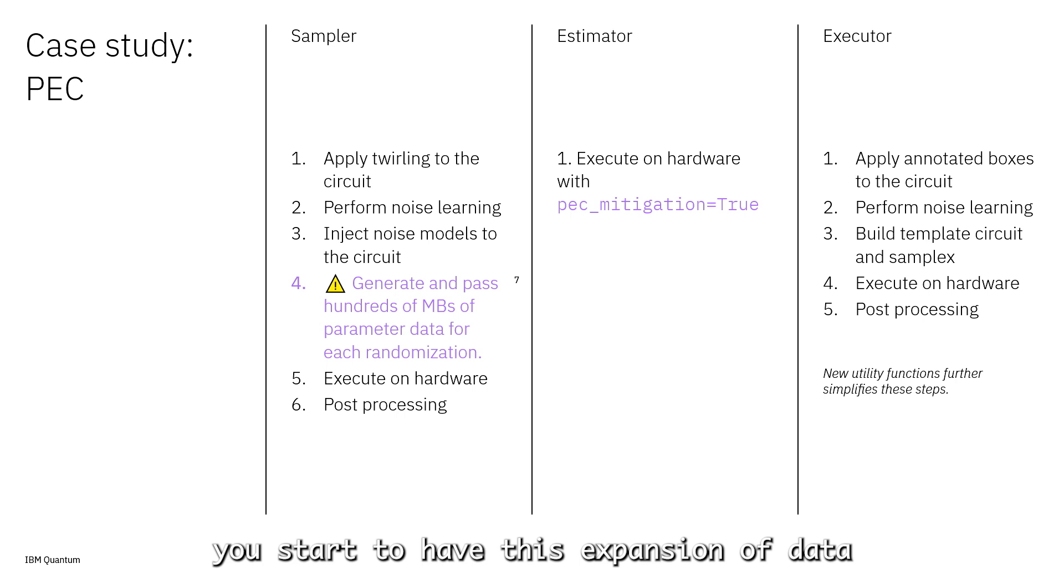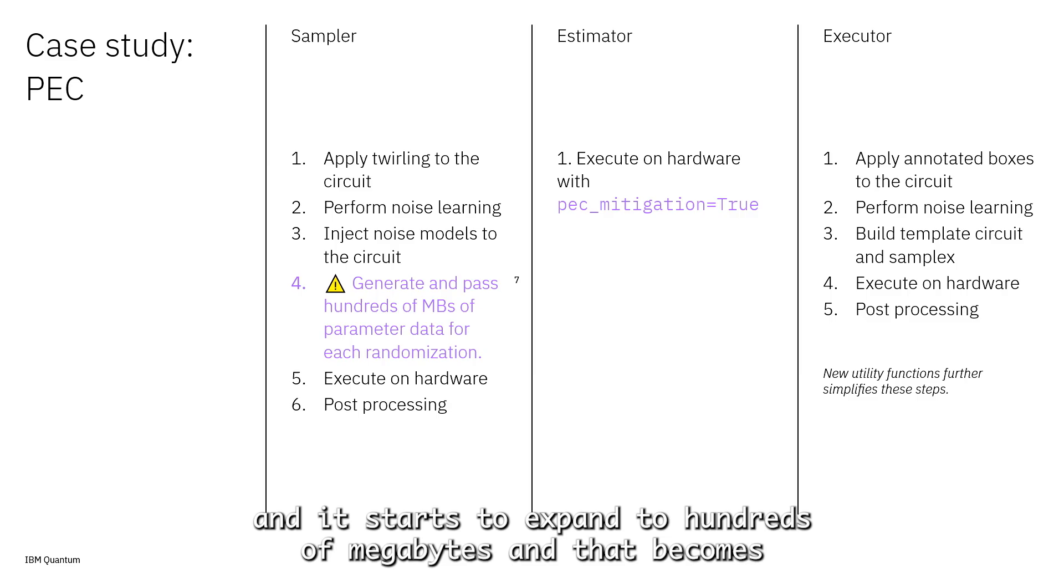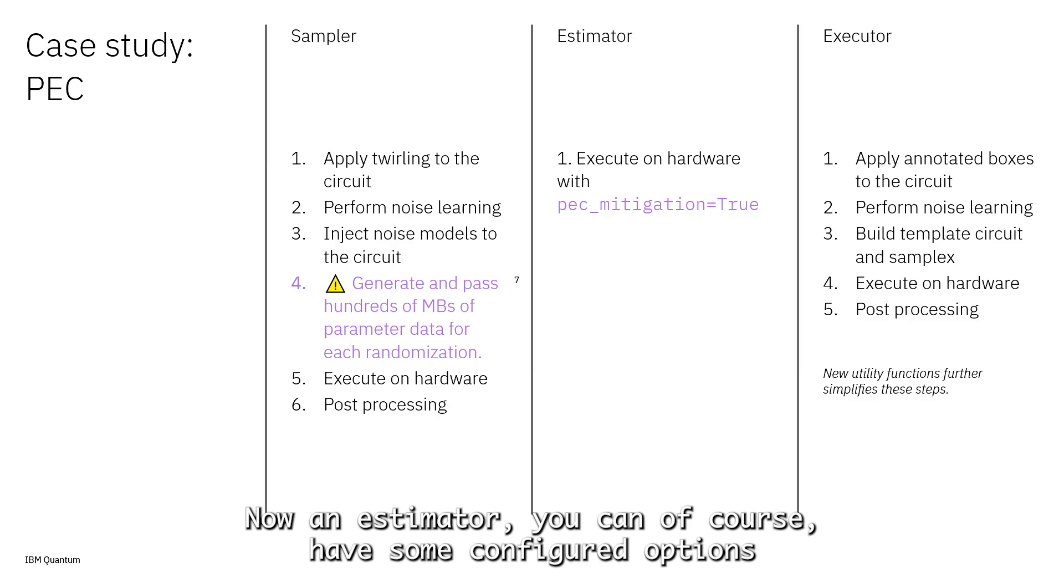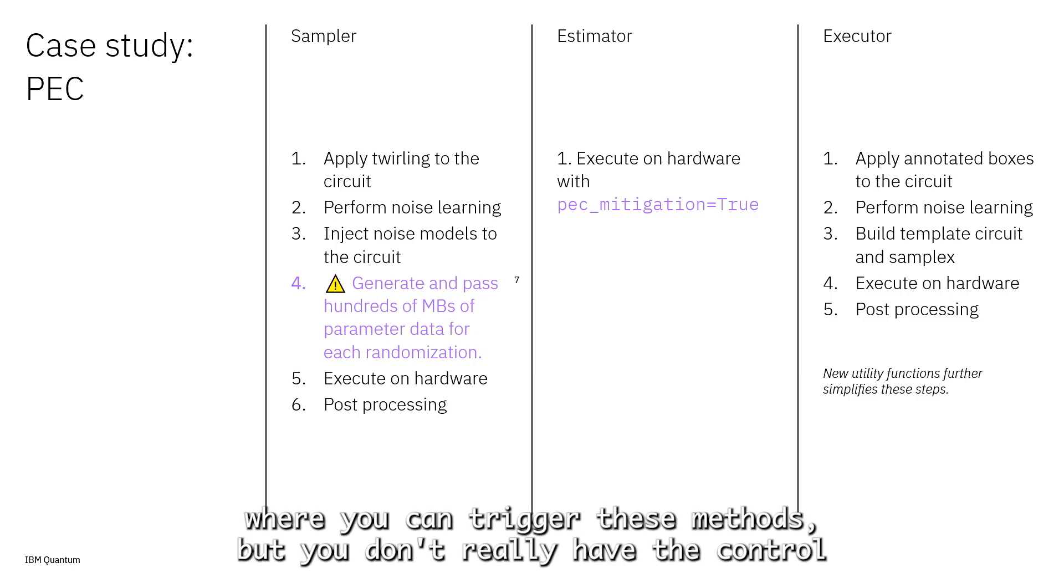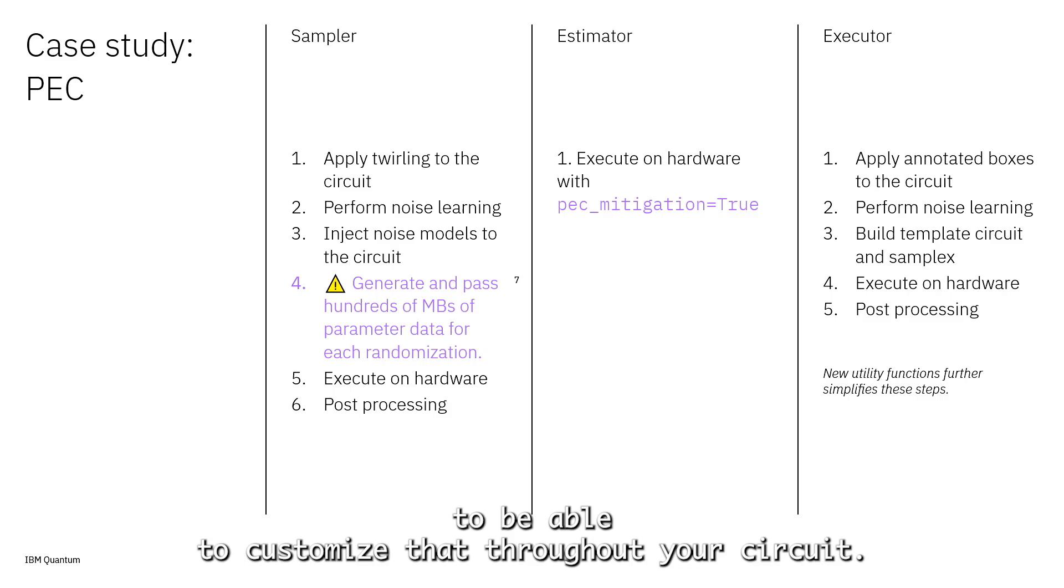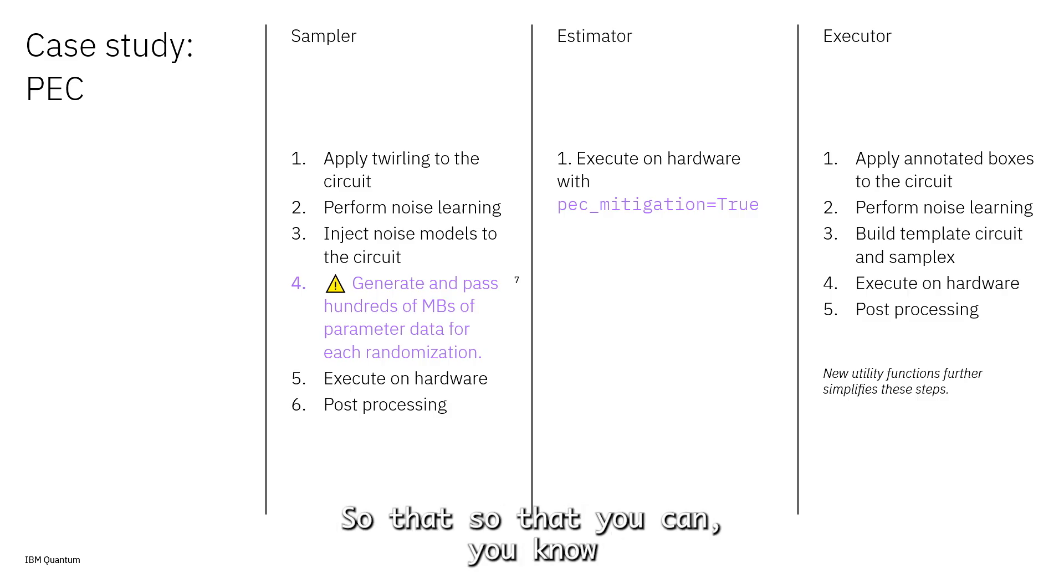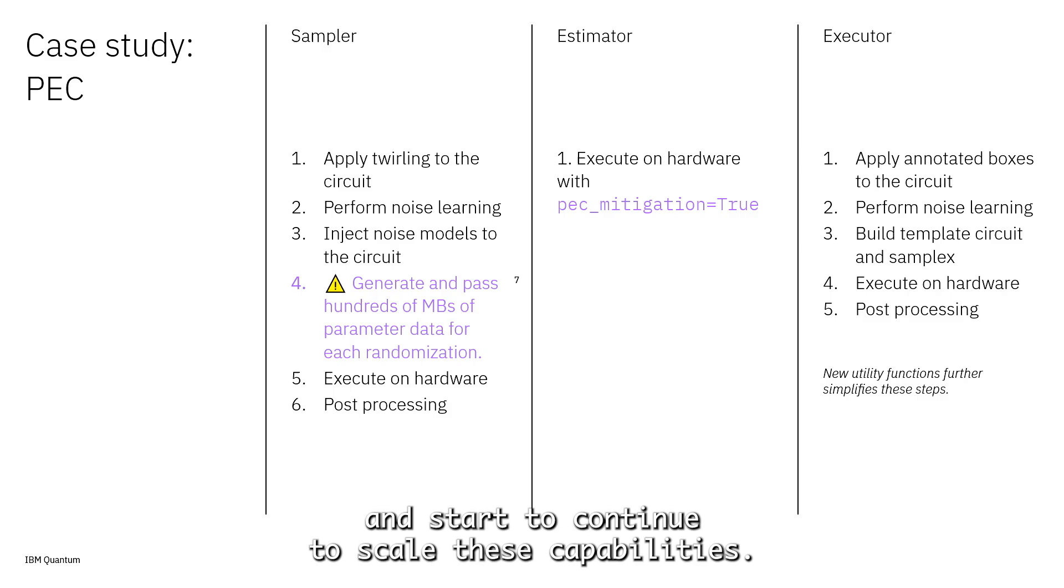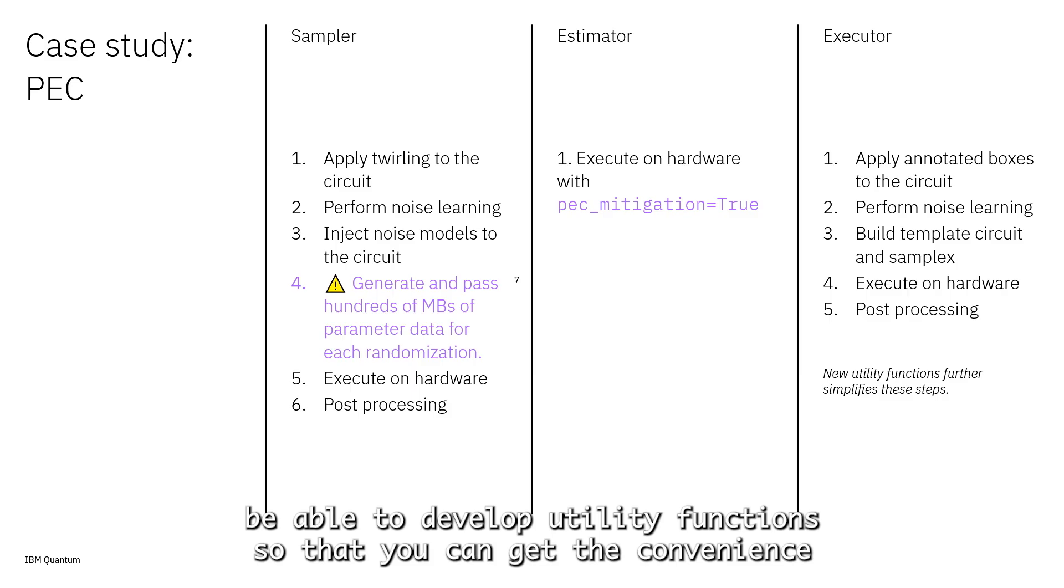With estimator, you can have some configured options where you can trigger these methods, but you don't really have the control to be able to customize that throughout your circuit so that you can converge on the variance faster. Finally, with executor, what we're really trying to do is bring both of these options together—we want you to have maximum control but not have to deal with the data management aspect and continue to scale these capabilities, and over time be able to develop utility functions so you can get the convenience you expect from estimator.